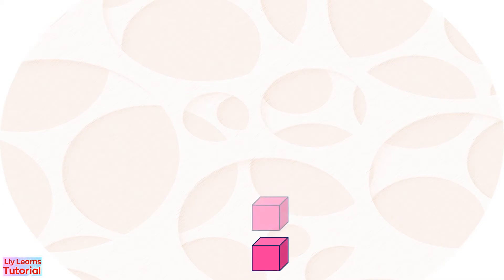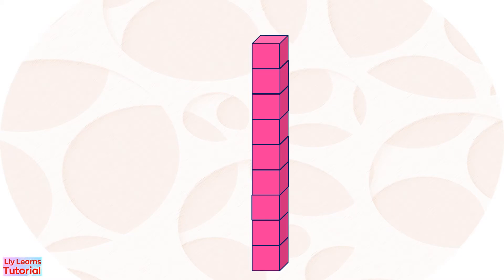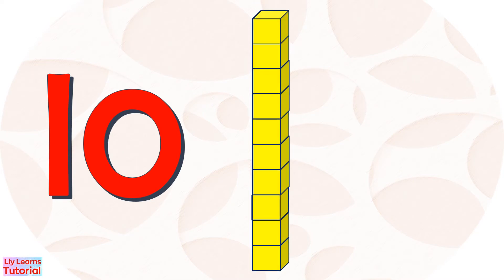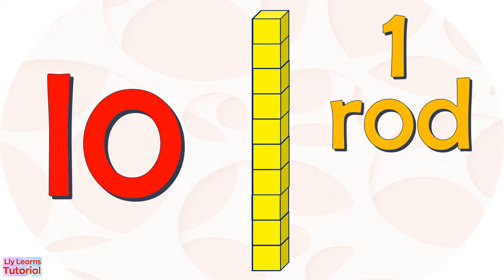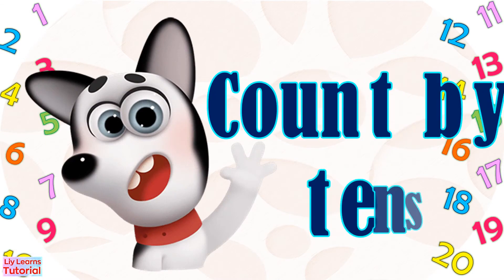Let's count the blocks: 1, 2, 3, 4, 5, 6, 7, 8, 9, 10. There are 10 blocks. You can also say this is one rod. When we count by tens, we say 10 for one rod, because each rod is equal to 10 units or 10 blocks.